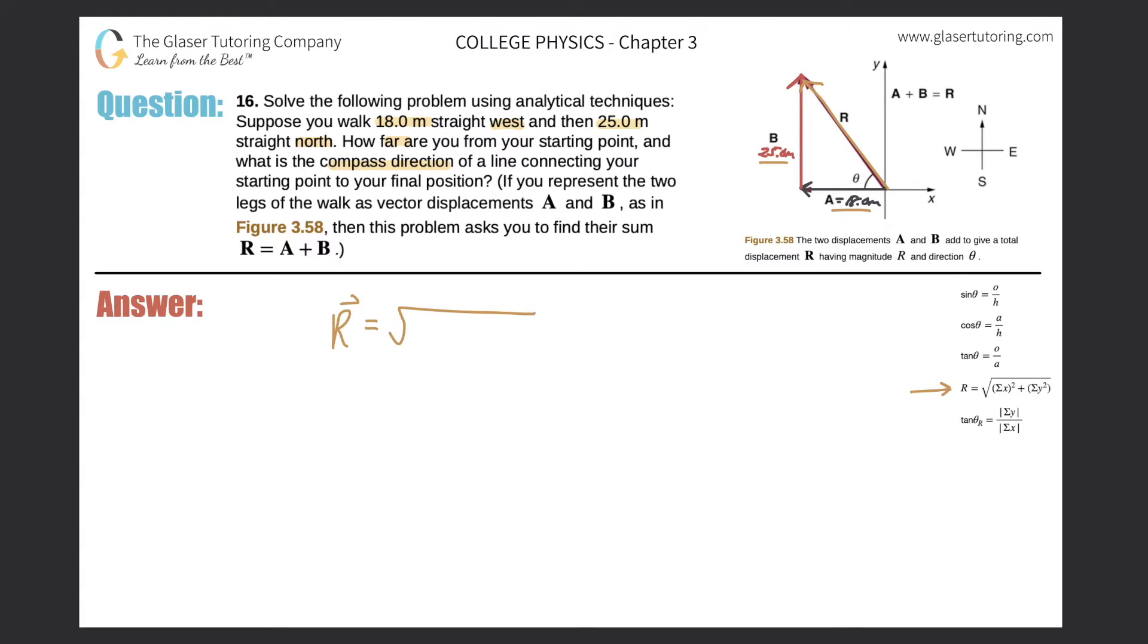So I'm actually just going to use that formula for this problem. The resultant vector will be equal to the square root of the sum of all of the x components squared plus the sum of all of the y components squared. So what are your x components in the problem? Well, we only have one x component and it's 18 meters. Now just be careful—in terms of the math here you're not really going to be able to mess it up because we're squaring it, but technically the value in here should be negative 18.0 meters. Why? Because it's due west, you're on the negative x-axis.